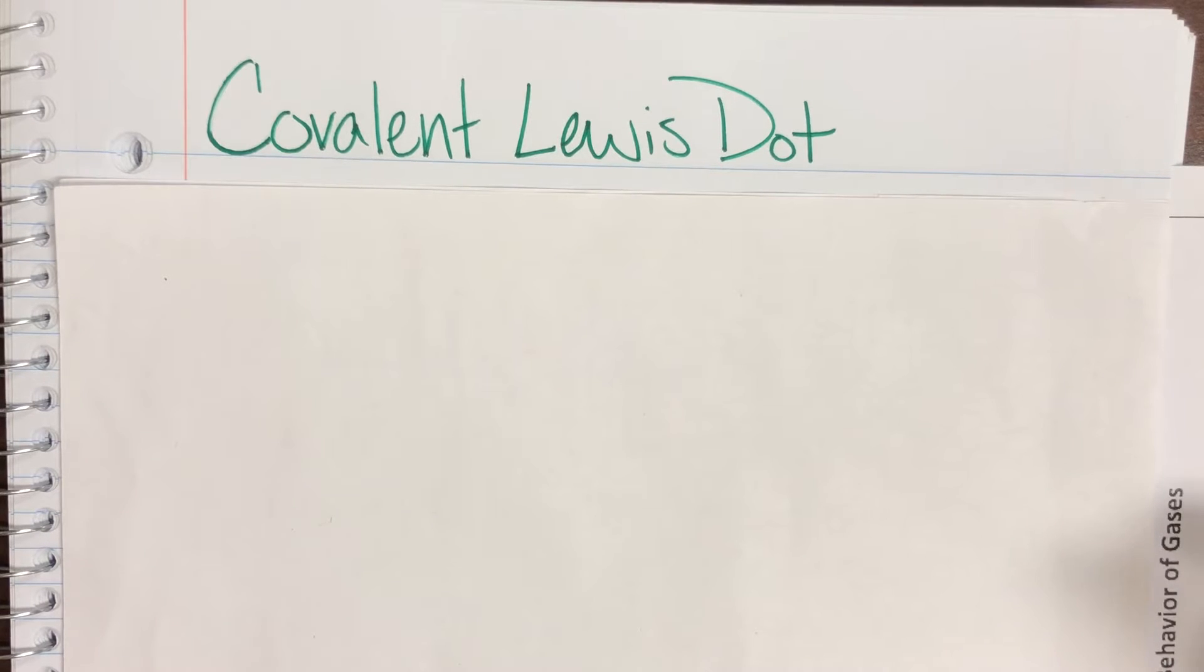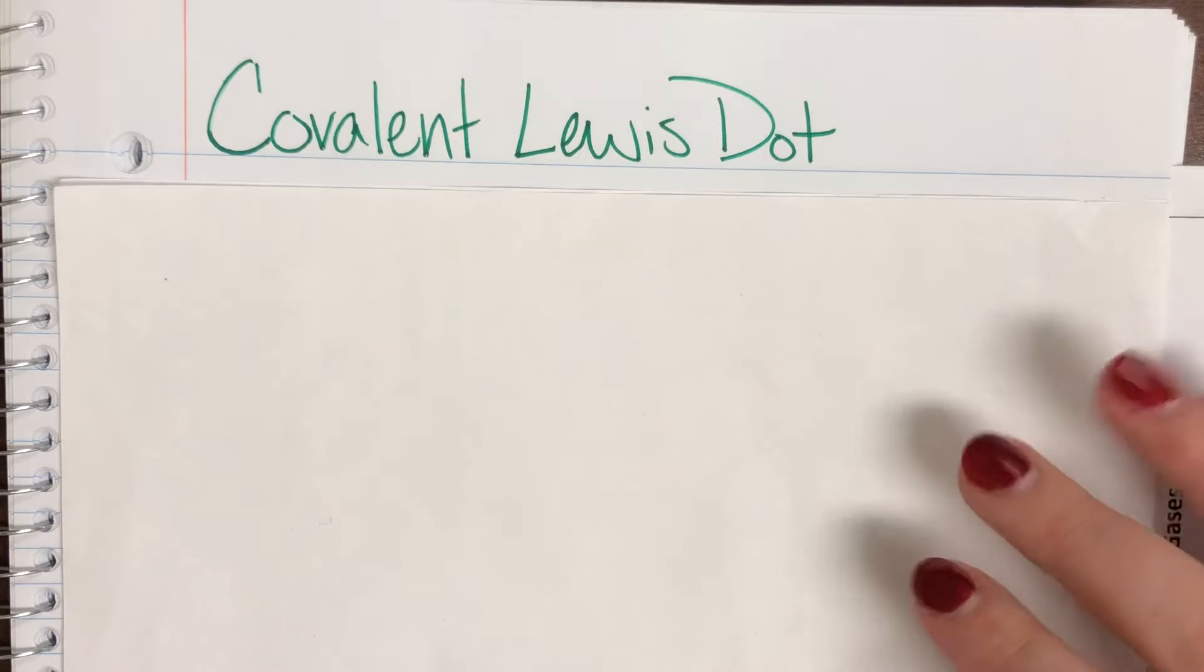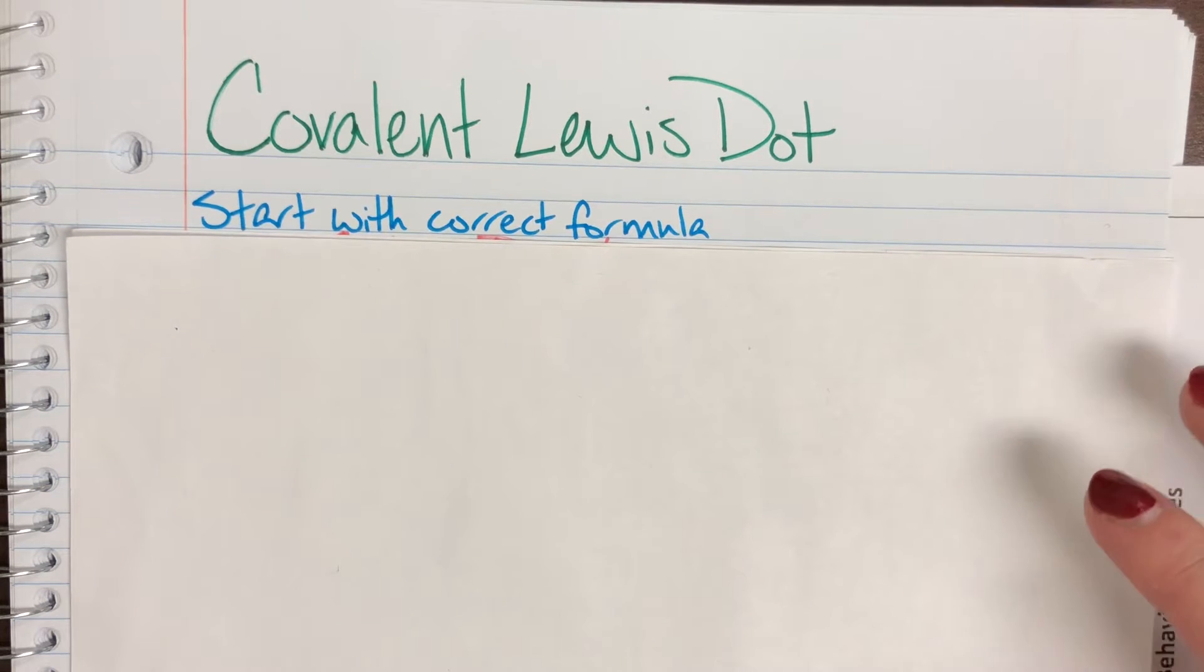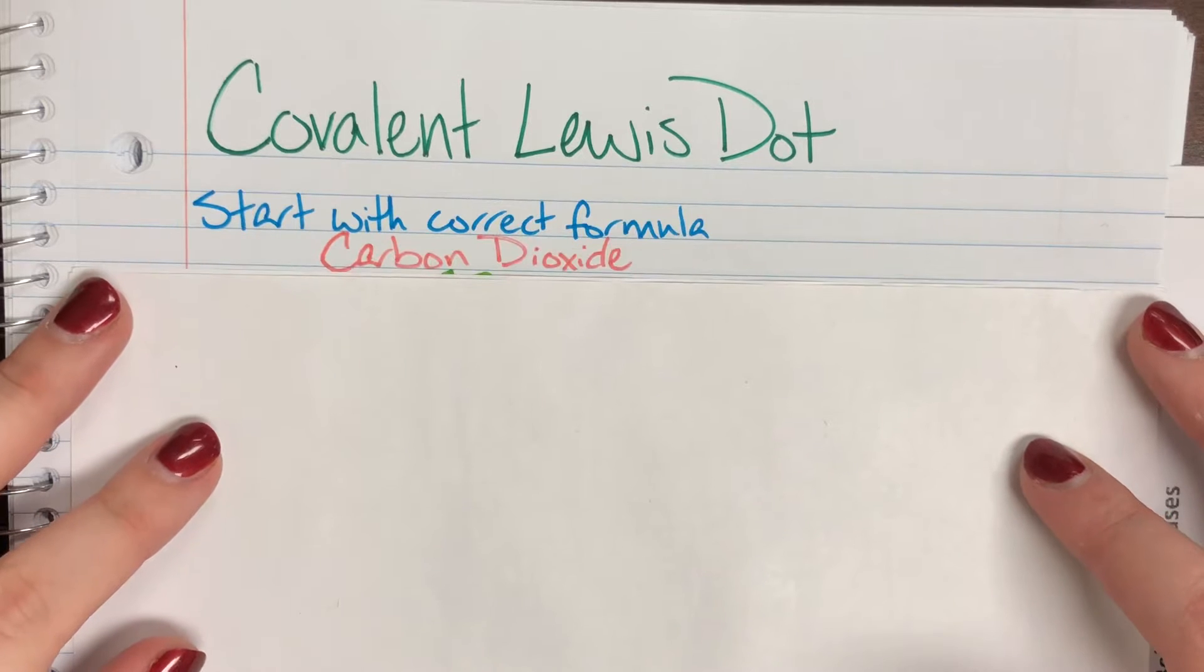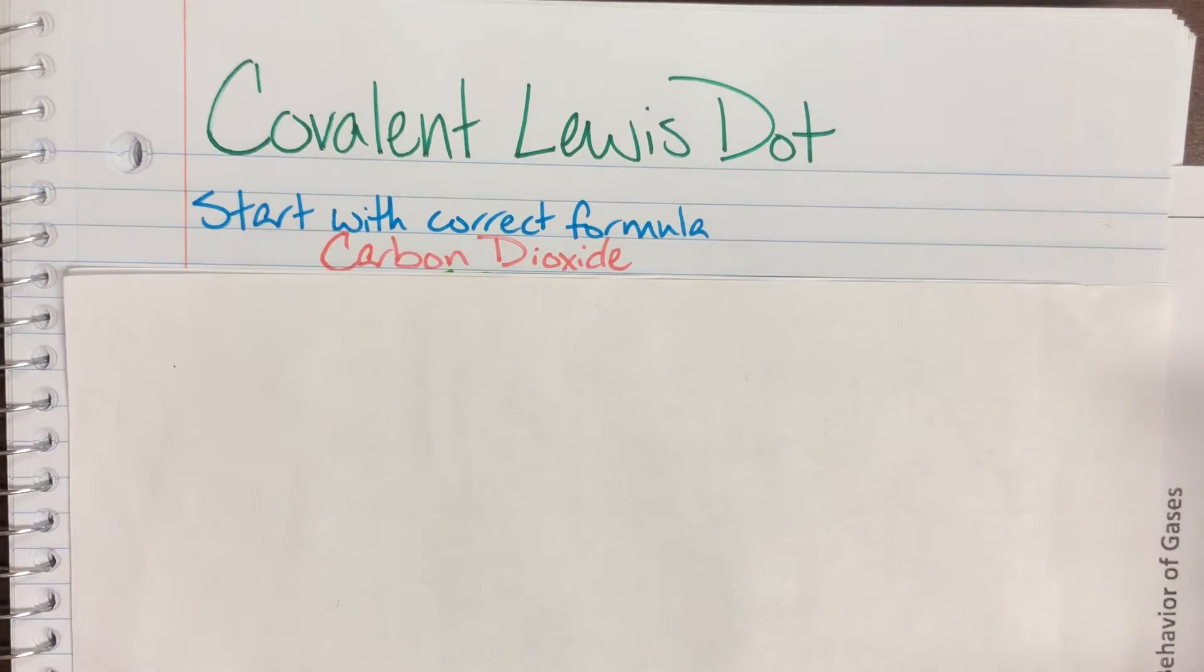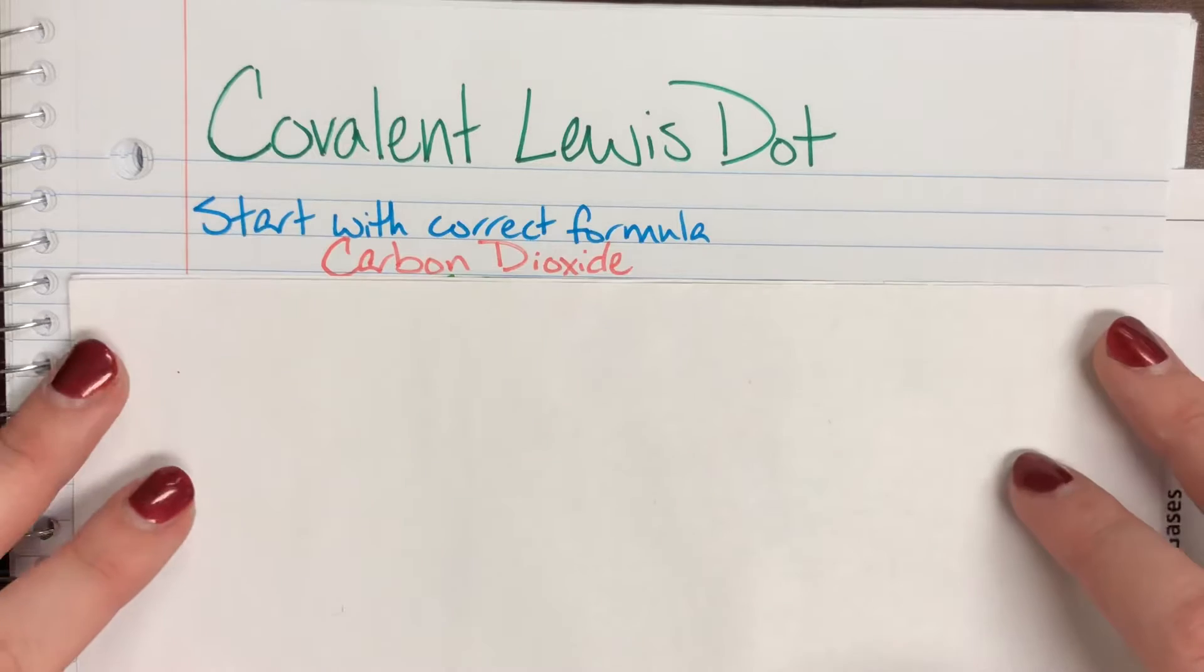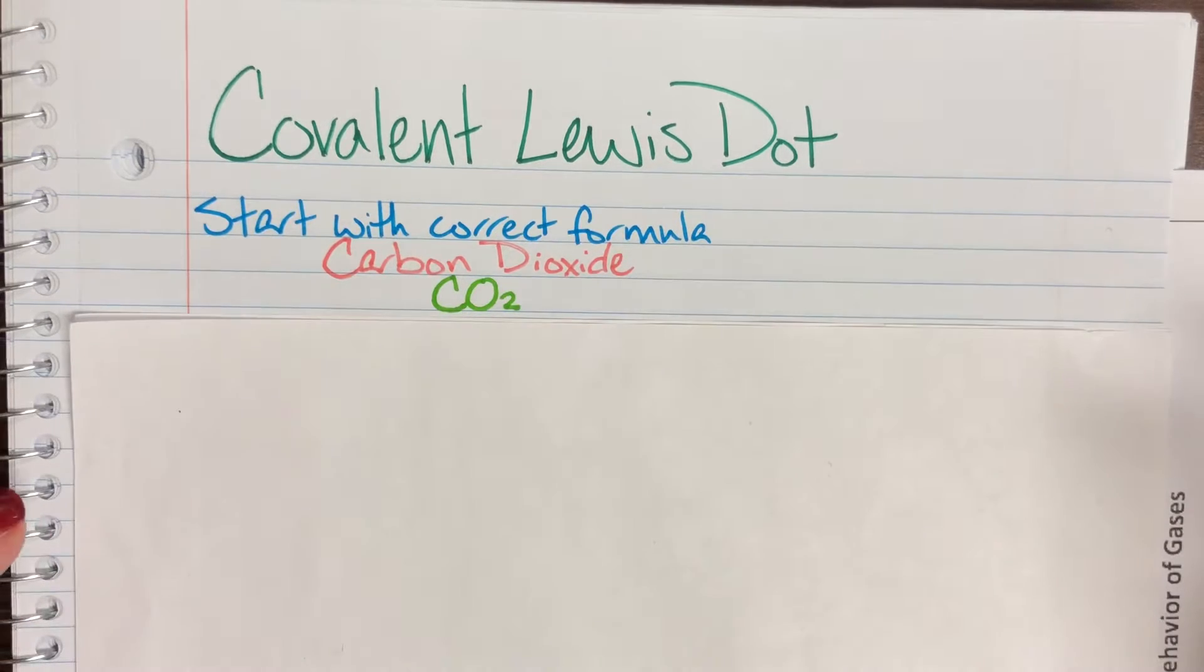We're going to start off with covalent Lewis dot structures. Just like with ionic, we need to start with our correct formula. So the formula we'll be working with today is carbon dioxide. You need to know prefixes for covalent compounds. Carbon doesn't have a prefix, so that means its subscript is one. Di means two, so I have two oxygens. CO2.